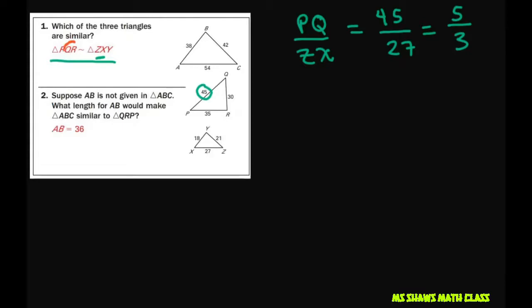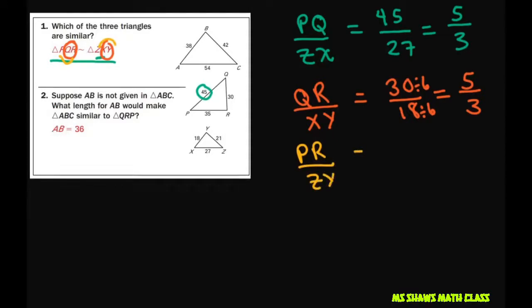So now let's try QR with XY. So QR is 30 and XY is 18. You can divide both of those by 6, and that gives you 5 thirds. And then the last one, we'll do PR with ZY. So PR is 35 and ZY is 21. Divide both of those by 7, and that gives you five thirds. So that's why they're similar.